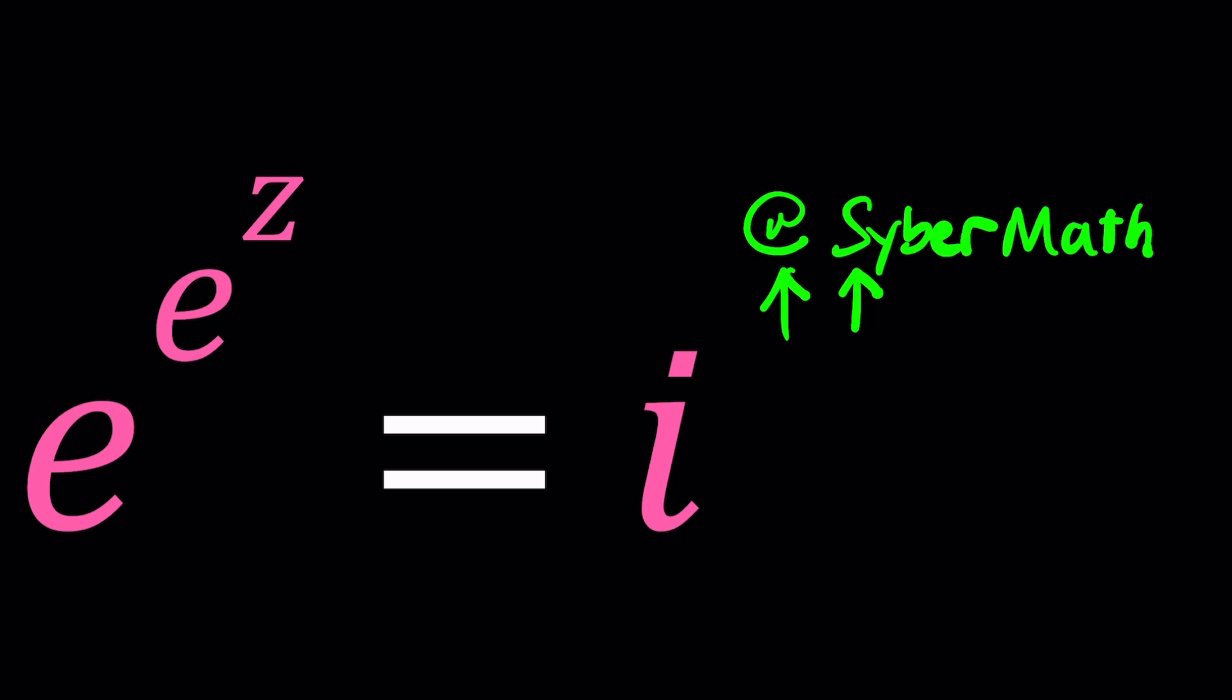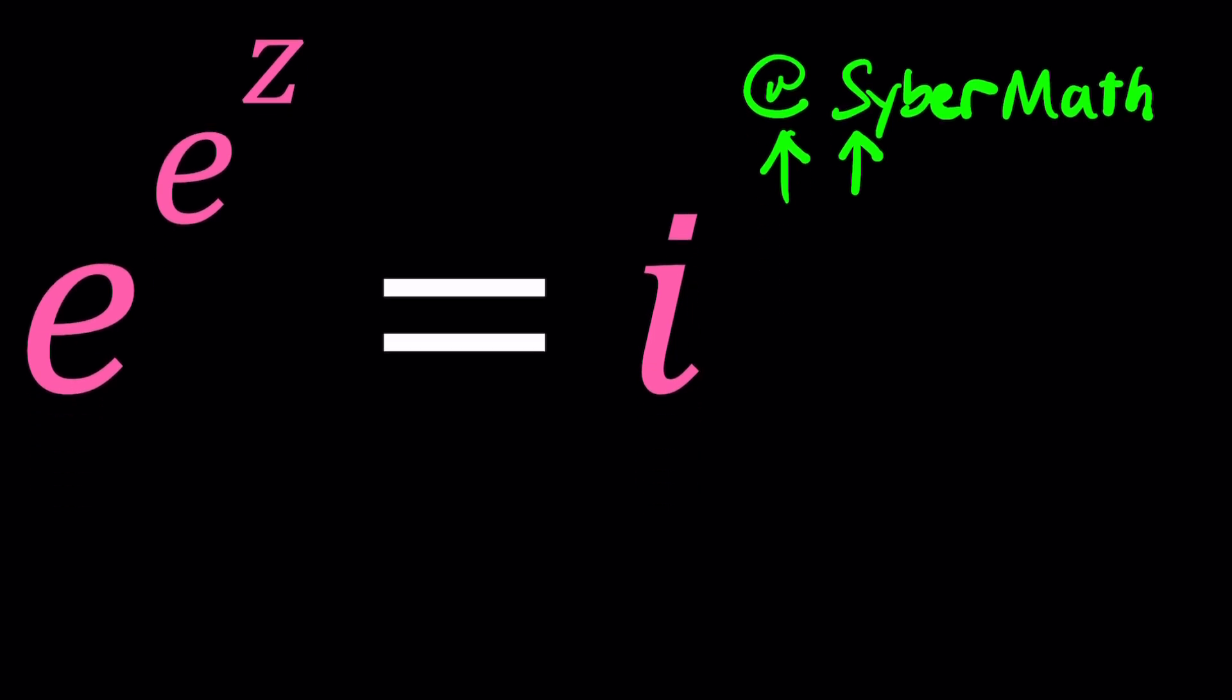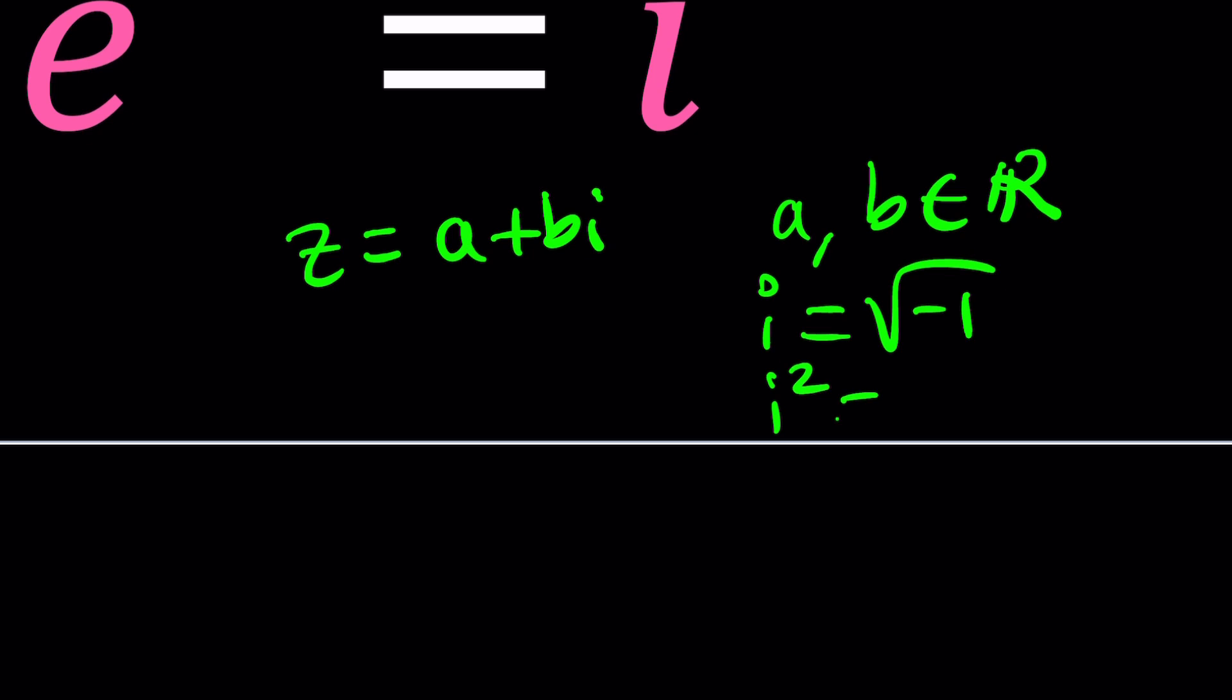So we have a really interesting exponential equation. Z is a complex number and to keep a long story short, a complex number can be written as a plus b i, where a and b are real numbers and i is the square root of negative one, which means i squared can be written as negative one, which is huge. Don't ever forget that.